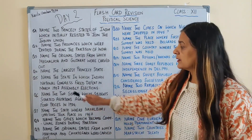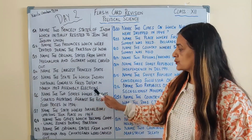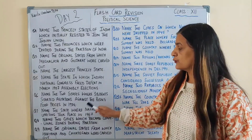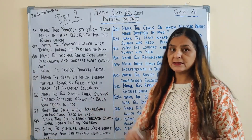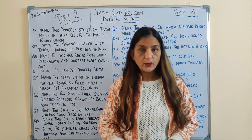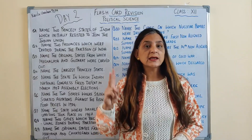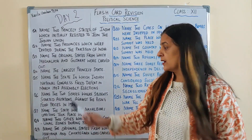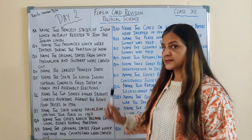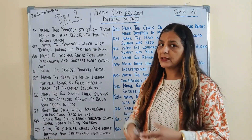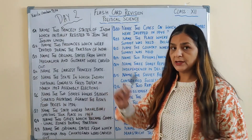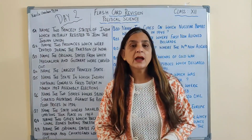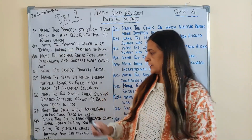Next question: name the two states where students started agitations against the rising food prices in 1974. Kaunsi do states thi India ki jahan pe students ne protest shuru kiye the, food prices rise ho gaye the unke khilaaf 1974 mein, and the answer is Bihar and Gujarat.